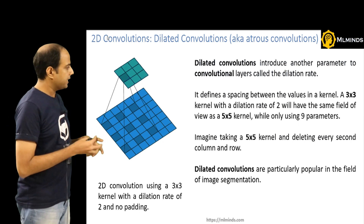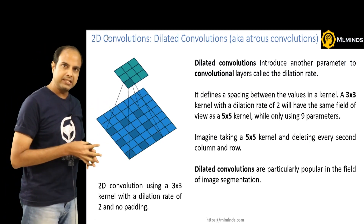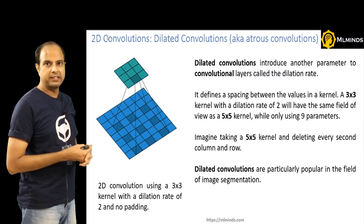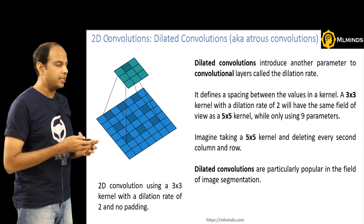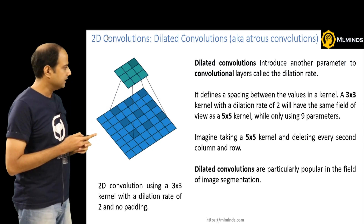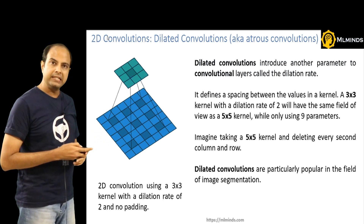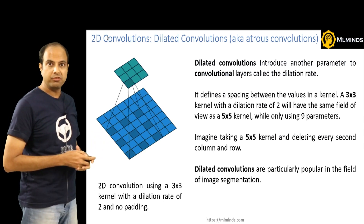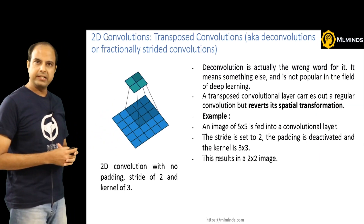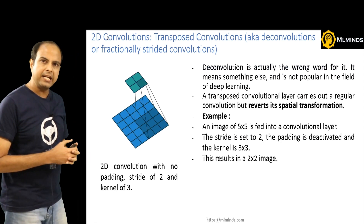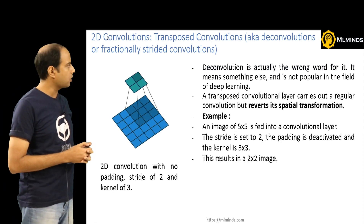Dilated convolutions are really useful when you want your filters to generate output by looking at a larger field of view in the original image. They are pretty popular in the field of image segmentation. That's about dilated convolutions.